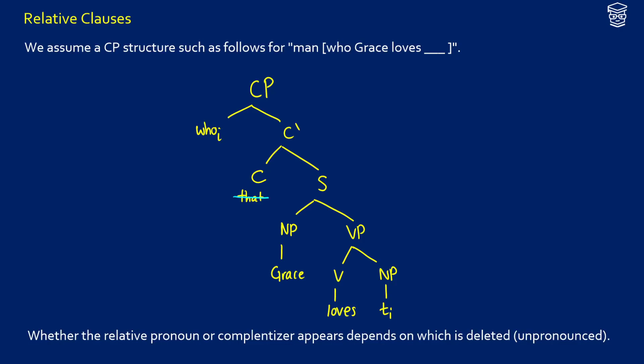Let's dive into relative clauses so we can see how the semantics works with traces and movements. If we take our phrase from the last video, "man who Grace loves," we can write our CP "who Grace loves" as follows.